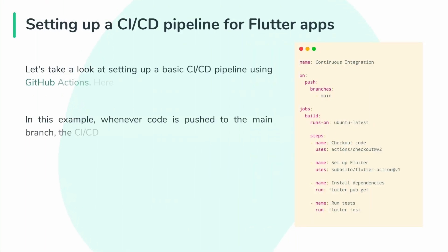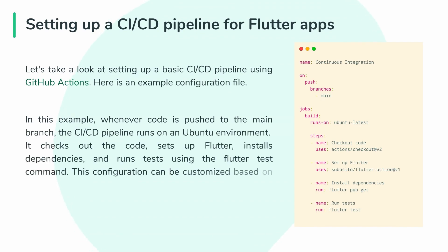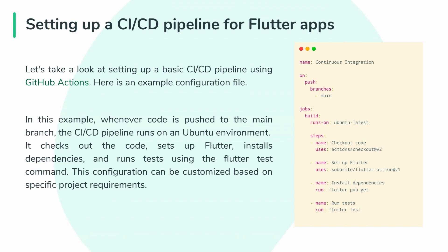Let's take a look at setting up a basic CI/CD pipeline using GitHub Actions. Here is an example configuration file. In this example, whenever code is pushed to the main branch, the CI/CD pipeline runs on an Ubuntu environment. It checks out the code, sets up Flutter, installs dependencies, and runs tests using the Flutter test command. This configuration can be customized based on specific project requirements.